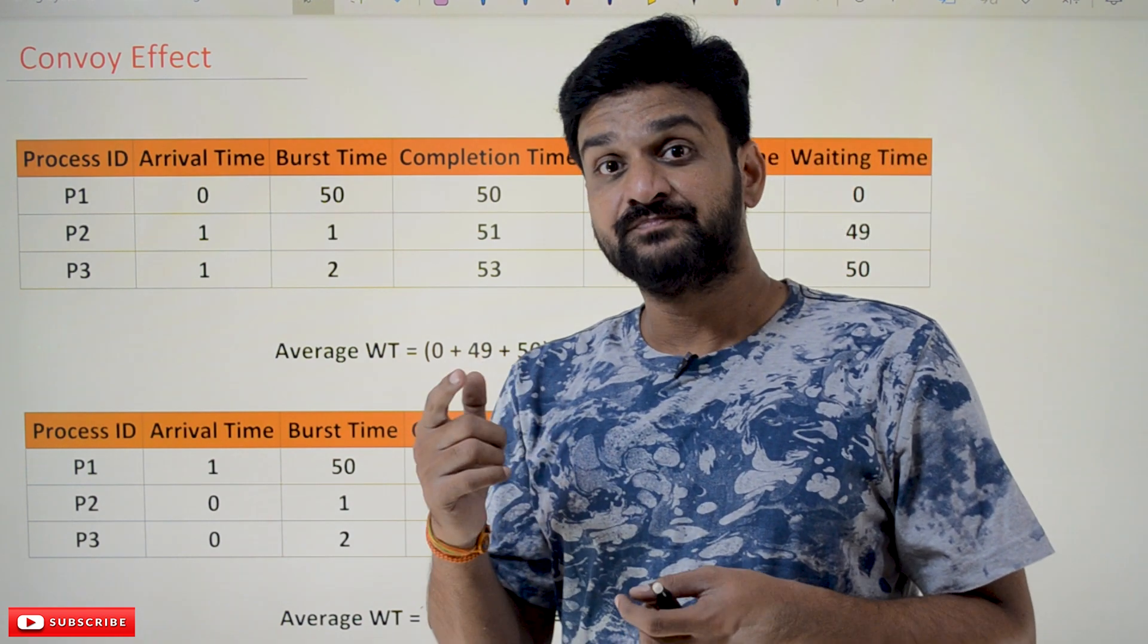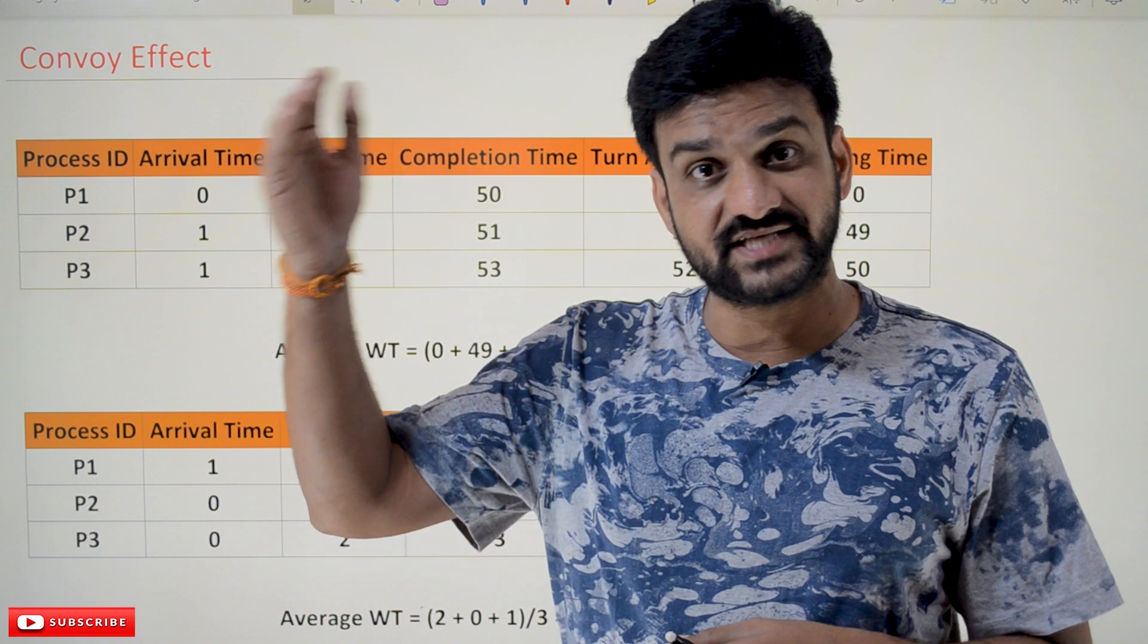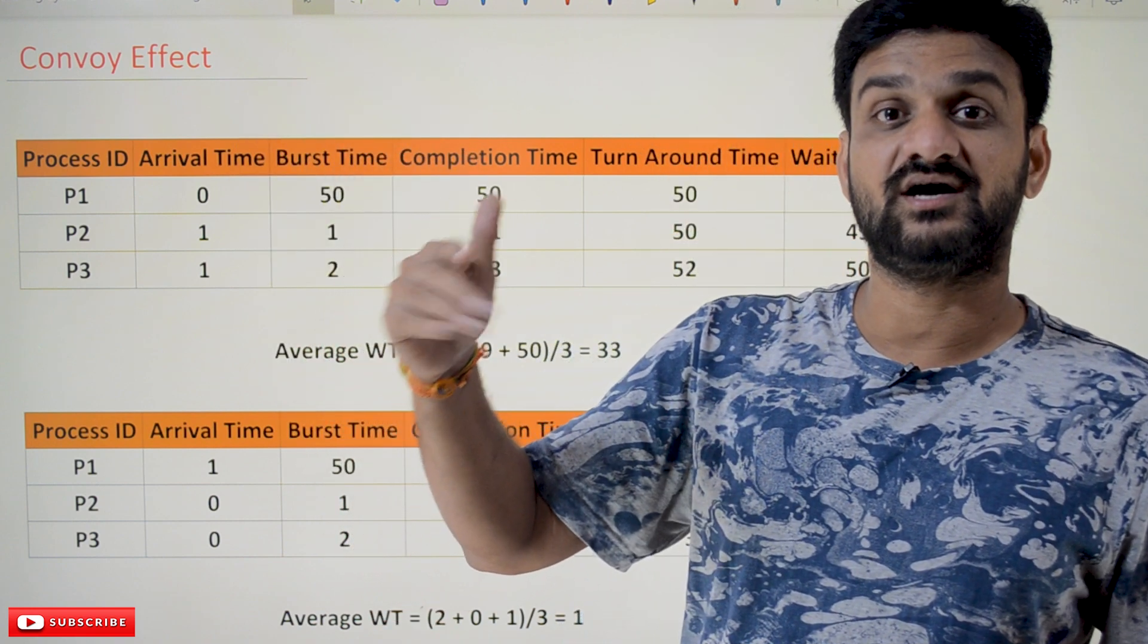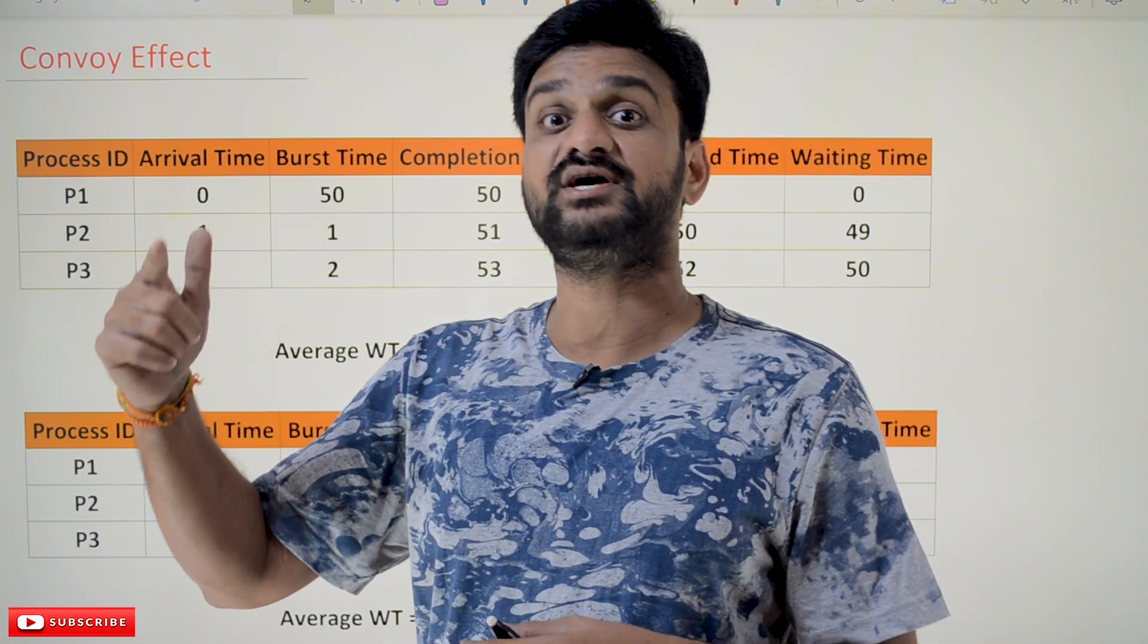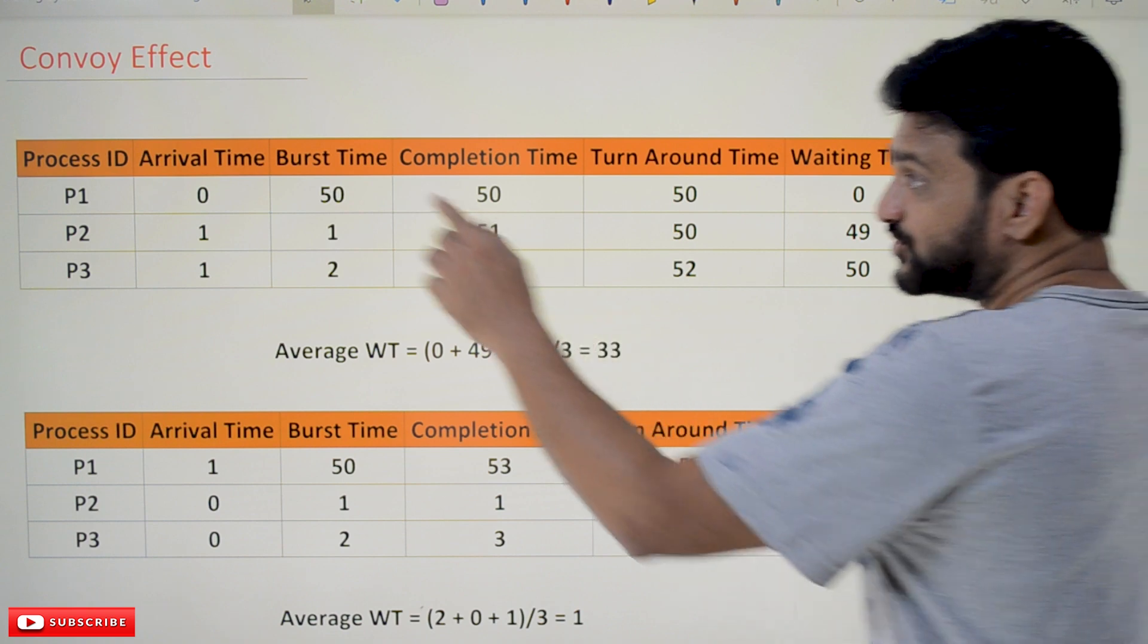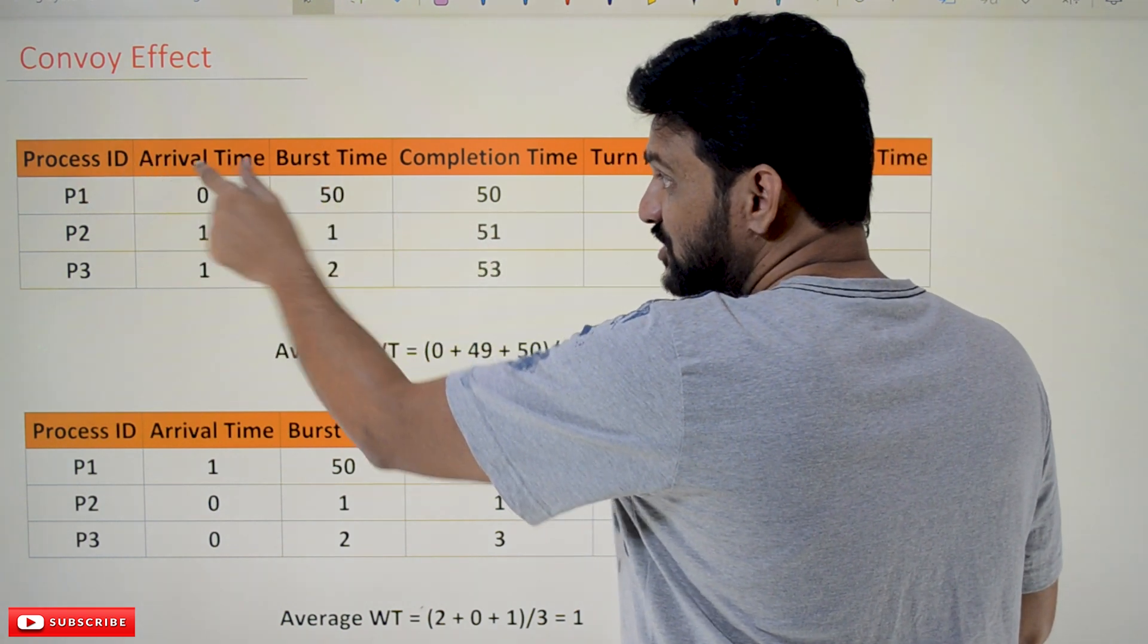For example, if there is a process which is having the longest burst time and it has arrived first, that is where the effect of convoy—the convoy effect—will get created. Let's try to understand by using this example. Here we are having process P1, the arrival time is 0, and the burst time is 50 units of time.